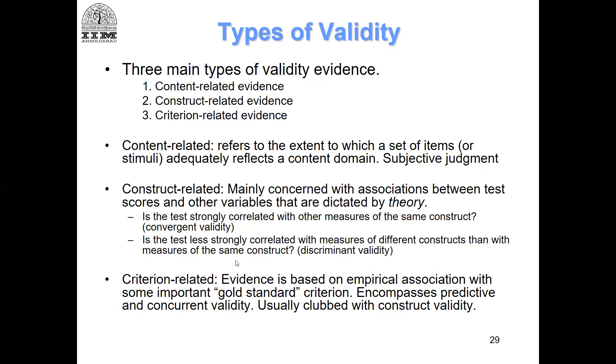First of all, please understand that this gold standard is not a similar scale. This is an outcome variable. So whatever construct you have, you will have to theorize that this construct leads to a particular outcome. Now, that outcome has to be measured through a particular measure, existing measure that you have, and then you work on it. Then you show the relationship.